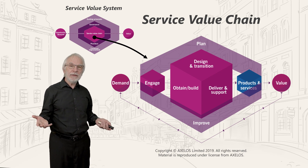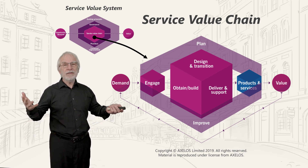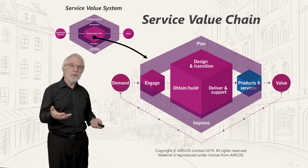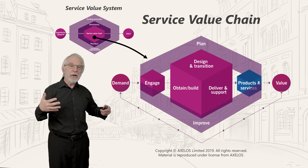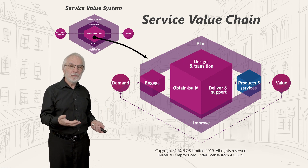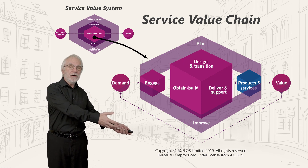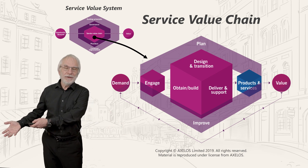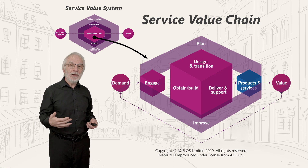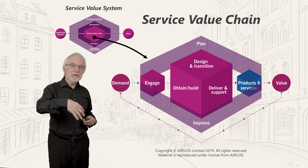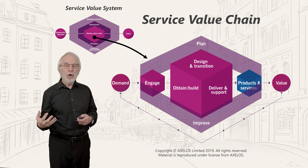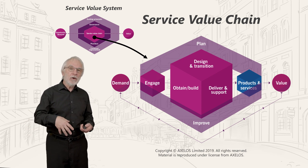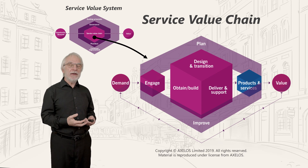Service value streams, service value chains, service value systems — they're fancy terminology, but they're things we do at home. You can apply it to making a meal. You've got an input of hunger, a hungry family, and an output of dinner. You're going to have to do these stages along the way; they're going to overlap. We do that without hanging the names on them — at work, we've done that without hanging the names on them either.